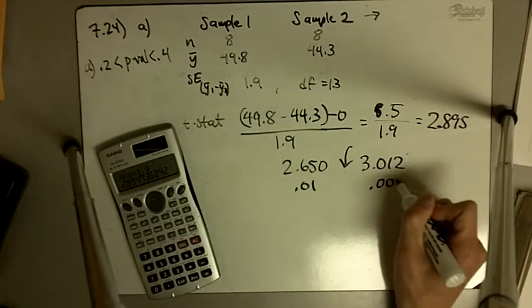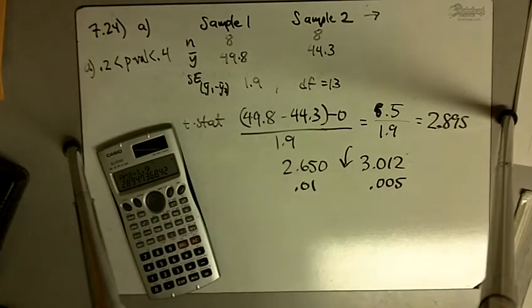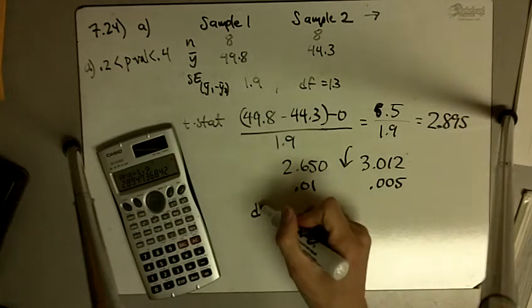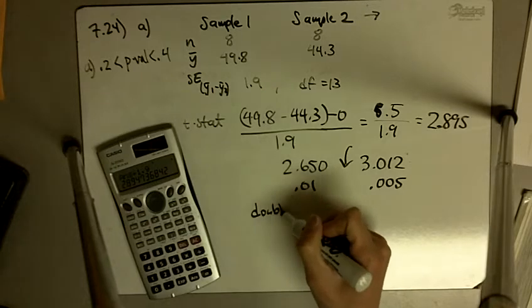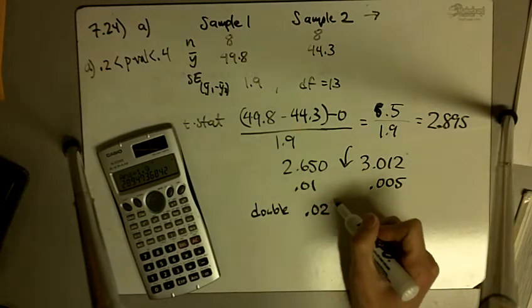Double for the two-tail probability means our p-value is between 0.02 and 0.01.